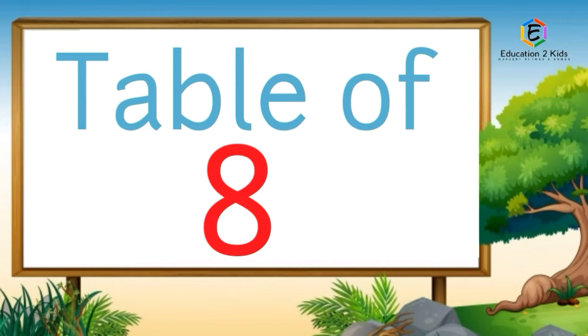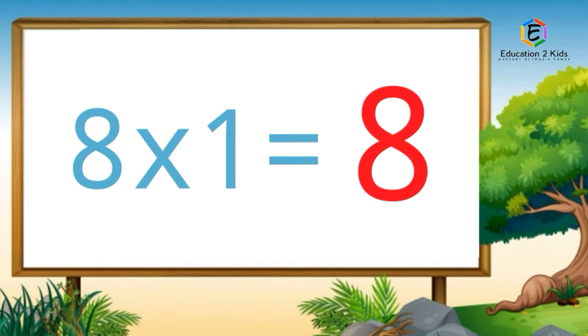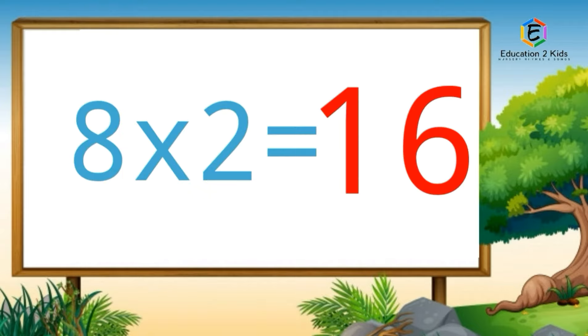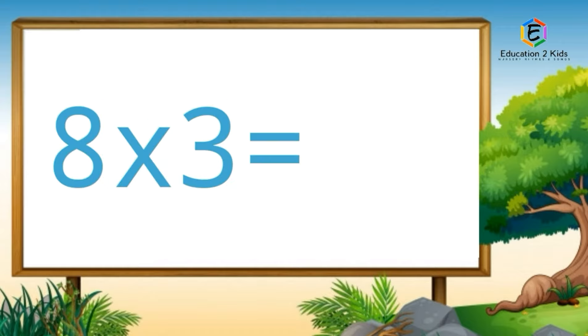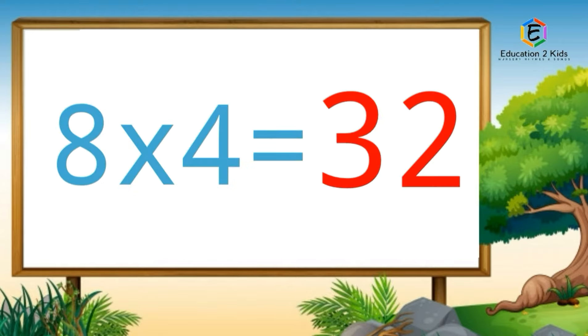Table of 8. 8 ones are 8, 8 twos are 16, 8 threes are 24, 8 fours are 32.